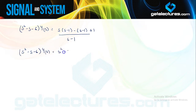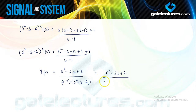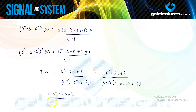Solving: s squared minus s minus s plus 1 plus 1 gives s squared minus 2s plus 2 in the numerator, over (s minus 1). So Y(s) equals (s squared minus 2s plus 2) divided by (s minus 1) times (s squared minus s minus 6). Factorizing the denominator: (s minus 1) times (s minus 3) times (s plus 2), giving the expression for Y(s).